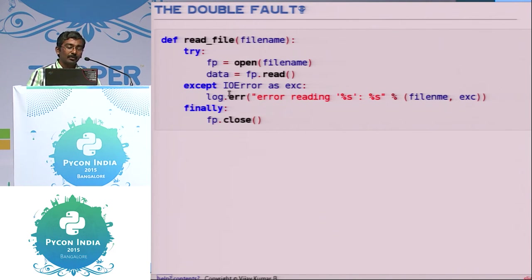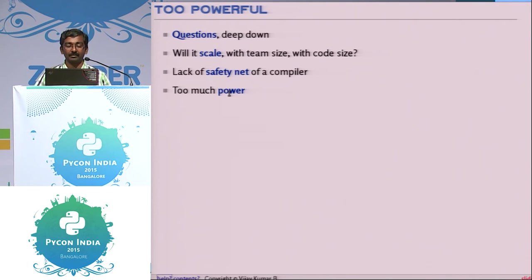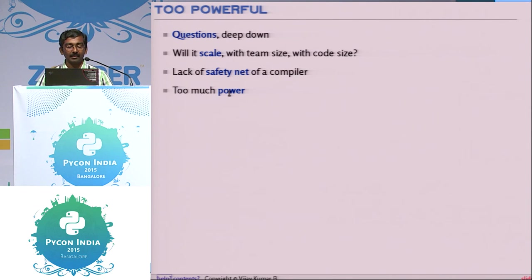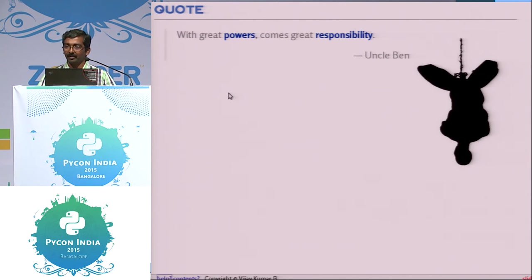These problems raise the question of whether Python is really useful for complex projects with large team sizes. Can Python scale to accommodate multiple members in a single team? Or is it really required to have the safety net of a compiler? These issues can be found by compilers like the Java compiler, but with Python you don't have that safety net. Python gives you too much flexibility and power, and like Uncle Ben said to Peter Parker: with great power comes great responsibility. So what's the responsibility we need to have when we write Python code? Unit testing.